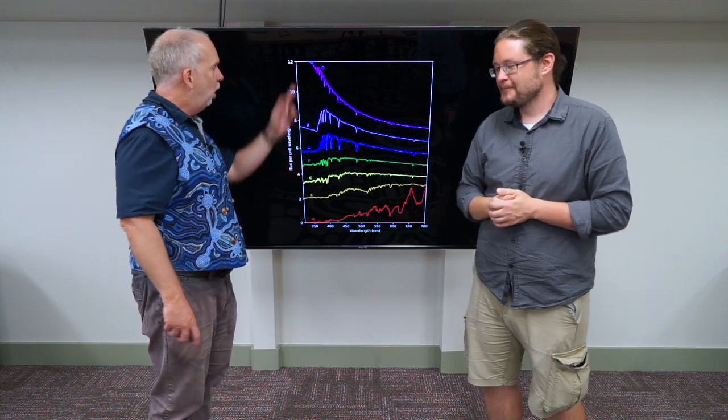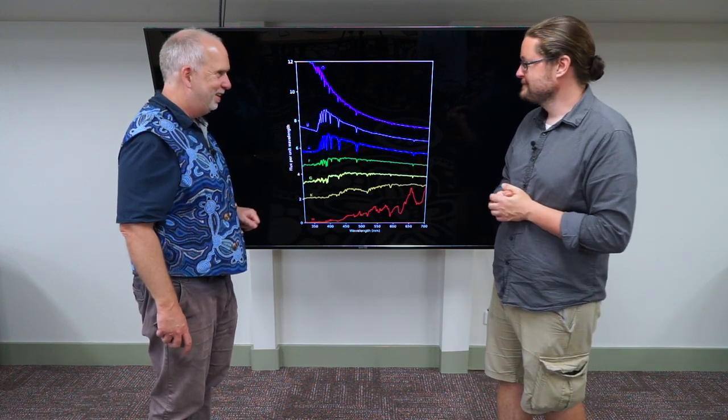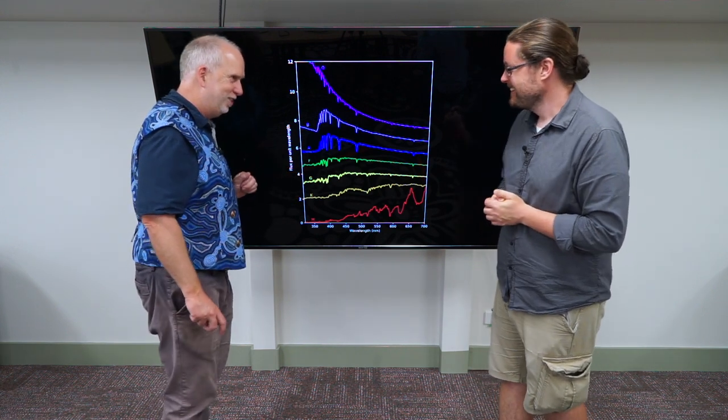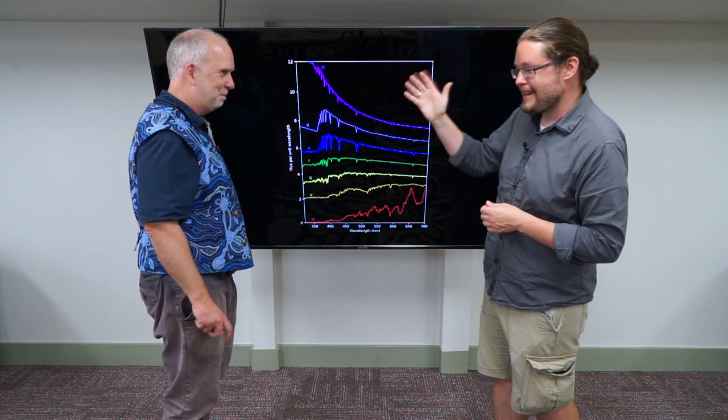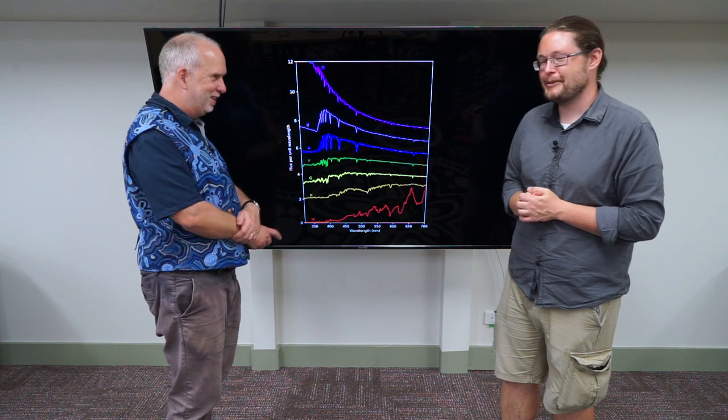And the normal acronym is O, B, A, fine, girl or guy, kiss me. Which is something... It would have been easier if it was A, B, C, D, E, F, G, but that's another story. That would be far too easy. Too easy.